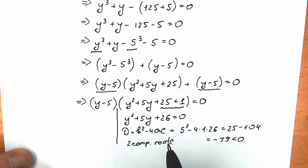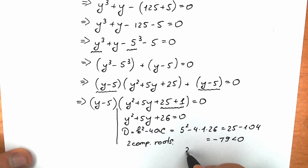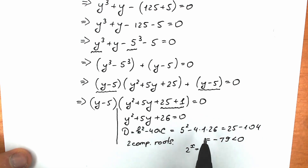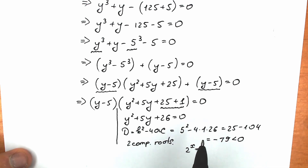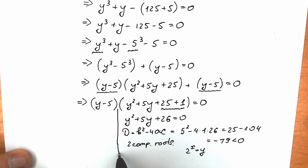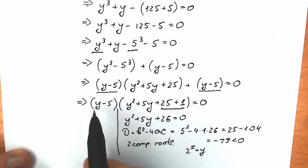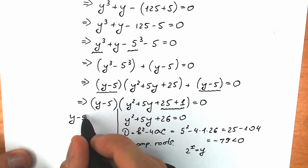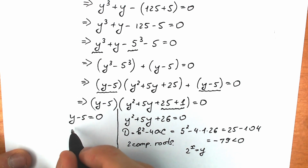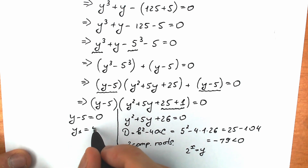If you're interested in the complex roots you can find them, but remember we have the substitution 2 to the x equal to y, so you'd need to plug those complex values back in. For now, from y minus 5 equals 0, we get y equals 5.